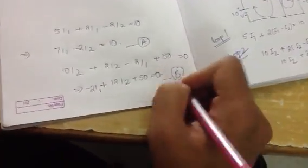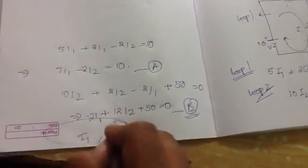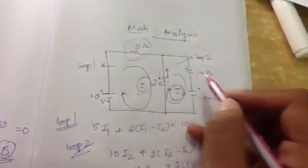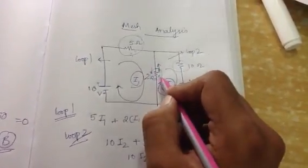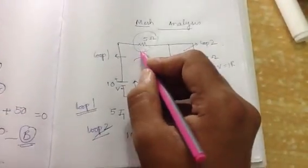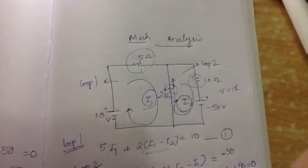Now we can solve equations A and B to get the currents I1 and I2. In this way, the currents in the loops can be found. From these values, we can find the voltage across each resistor: the voltage across the shared resistor is (I1 minus I2) times 2; the voltage across the 10-ohm resistor is 10I2; and the voltage across the 5-ohm resistor is 5I1. In this way, we can find currents and voltages in passive elements using mesh analysis. That is the concept of mesh analysis; I will be covering super mesh analysis in my other videos. Thank you.